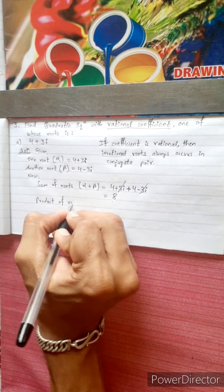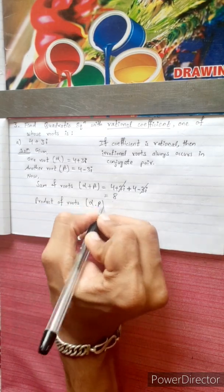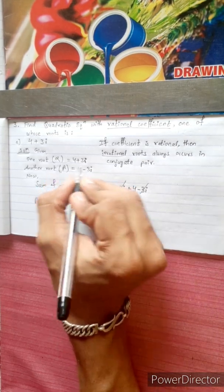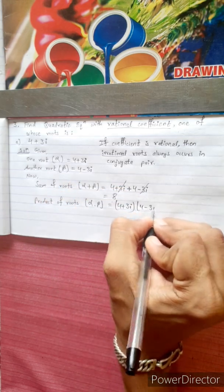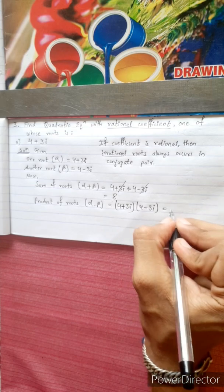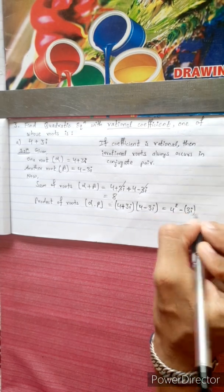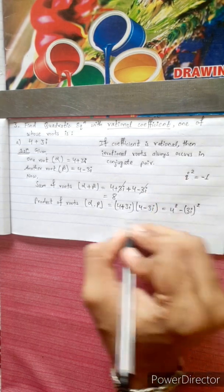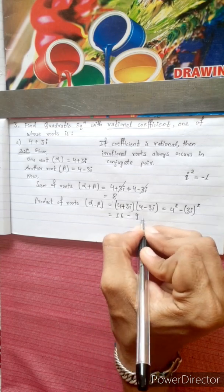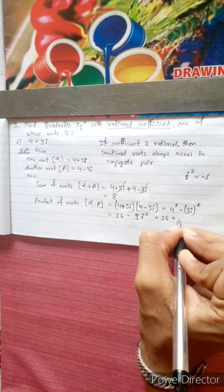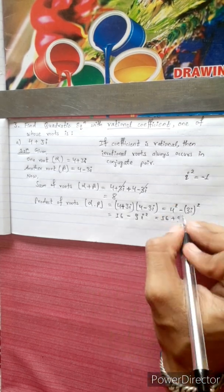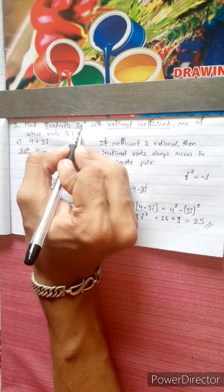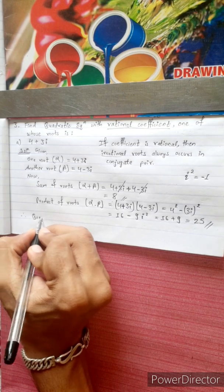Product of roots: alpha into beta equals (4 plus 3i) into (4 minus 3i). Using the formula (a plus b)(a minus b) equals a squared minus b squared: 4 squared minus (3i) squared equals 16 minus (minus 9) equals 25.